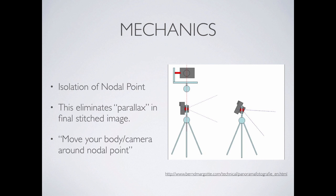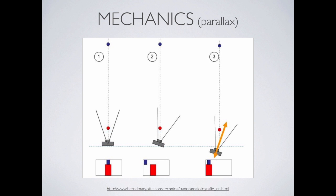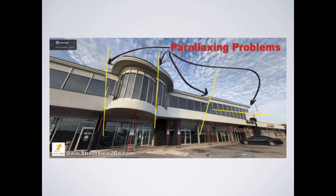If we understand where the nodal point is and we move around that point, we won't end up with those kinds of errors. Instead of taking the panorama by swinging yourself, the camera stays in the same place and we move around the camera. The field of view issue generally happens with a near and a far object relationship. If I was swinging the camera without isolating the nodal point, near objects would shift position relative to far objects. If we isolate the nodal point and rotate around it, all objects stay in proper alignment.